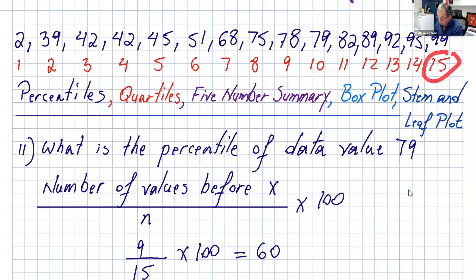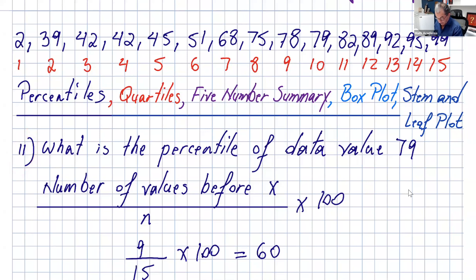So we have 15 numbers in this data, and that's our sample size, which is n. Now, this question — I put 11 because we did the 10 past about standard deviations, usual and unusual data — but this is another way of analyzing the data. So, the question says: what is the percentile of the data value 79?